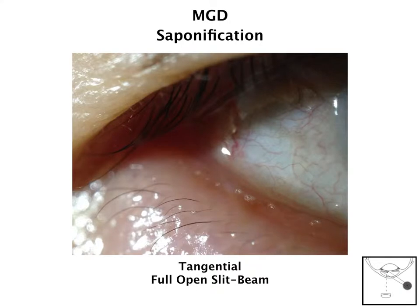Another time that you want to use tangential illumination is when you're looking at saponification. It kind of reminds me of when you're looking at a clear cell through a microscope — how do you contrast that? The best way is with a pseudo-indirect illumination with tangential illumination. You can really see that highlighted here on this photograph in this patient who had meibomian gland dystrophy, or MGD.